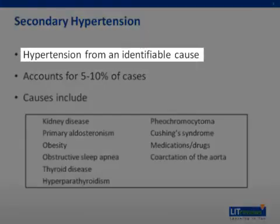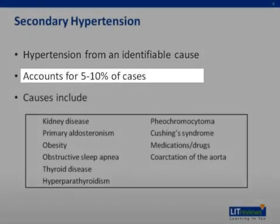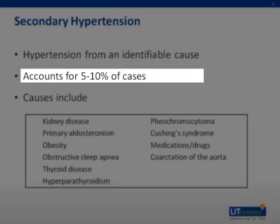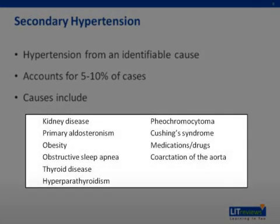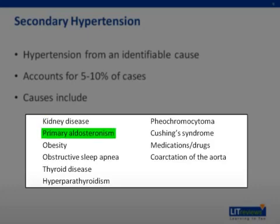Secondary hypertension is caused by an identifiable underlying source and accounts for 5% to 10% of cases. Examples of secondary hypertension are outlined in this slide, but the most common forms are kidney disease and primary aldosteronism.